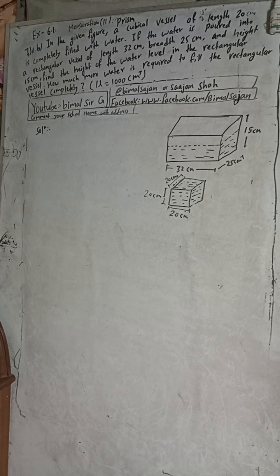Hi class 9 and 10 students, welcome back to Bimal Sarji's YouTube channel. This is question number 7b, exercise 6.1, mensuration, second part — prism, class 9 compulsory mathematics. In the Bimal Sarji YouTube channel you will get solutions of class 9 and 10 of optional maths, compulsory maths, as well as science. The video description of every solution includes channel details, useful information, formulas, and important things missed during explanation, so check the video description properly.